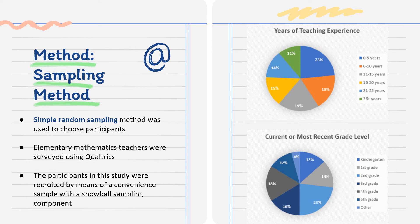In an effort to choose the sample group for the study, they used the simple random sampling method, in which a Qualtrics survey was sent via email to the entire population of math teachers. About 583 elementary math teachers responded, many of whom were kindergarten through fifth grade teachers with about zero to five years of experience on average.